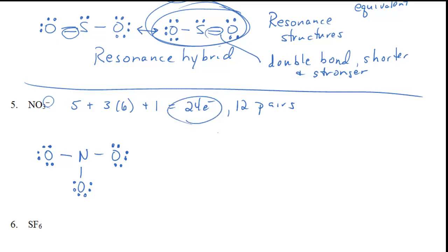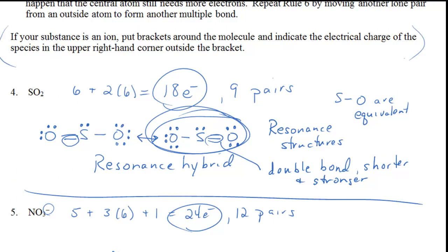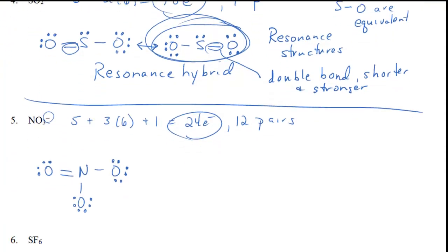We've placed 12 pairs — 24 electrons. Are we done? No, not quite. The nitrogen is short of two electrons; it only has six electrons around it. If you've placed all the electrons and the central atom ends up short, make a multiple bond. Start with the leftmost oxygen and make a double bond. Now all the octets are satisfied. Since this is a charged species, we put brackets around the molecule and indicate the electrical charge — minus 1 — in the upper right corner outside the bracket. For now, we're just going to say it's minus 1 overall.